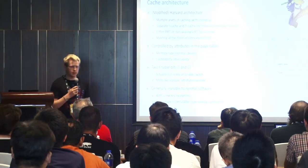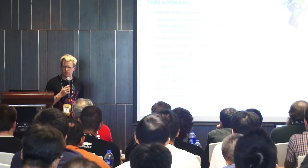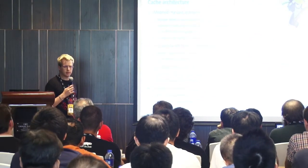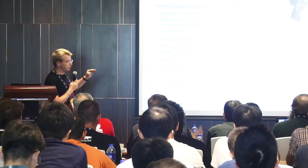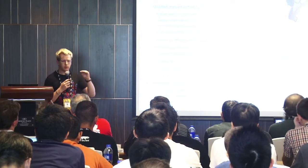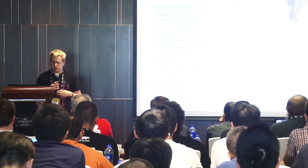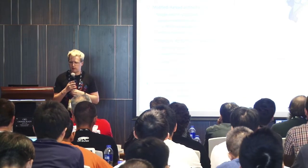The cache can either be PIPT — physically indexed, physically tagged — or non-aliasing VIPT — virtually indexed, physically tagged — for the data cache. The instruction cache and data cache meet at the point of unification. For instance, level 1 has separate instruction cache and data cache, and at level 2 they unify to a single cache. There is also a level 3 system cache.